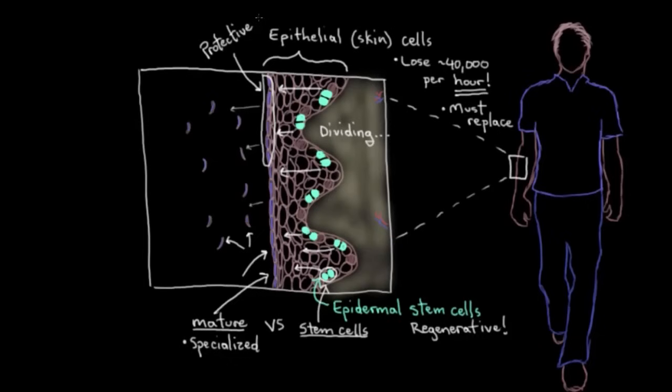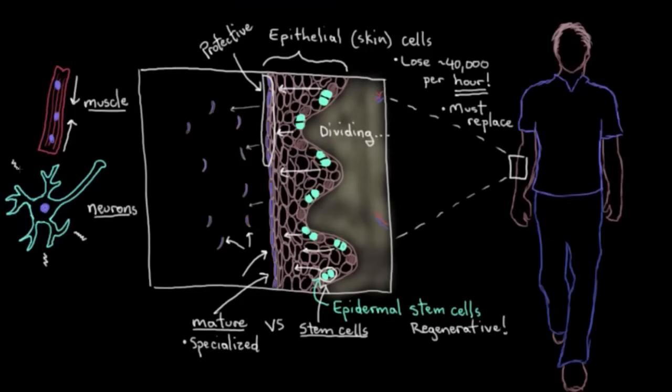And you know, just thinking of other adult cell types, right? Like muscle cells have a contractile function. And neurons have a message sending function. And bones have a rigid structural function.